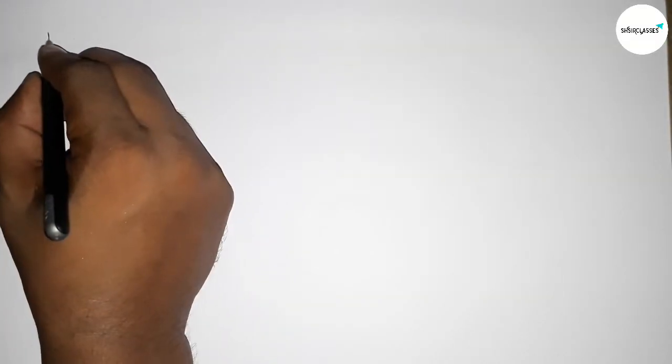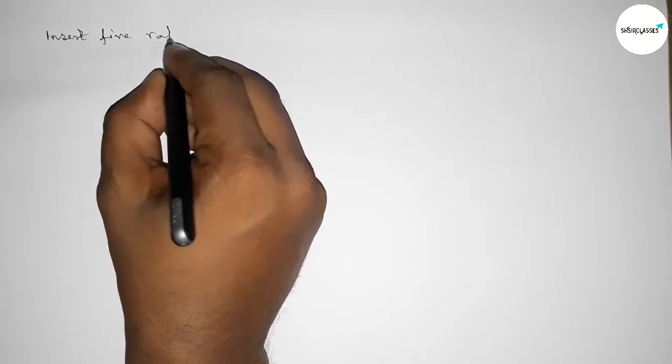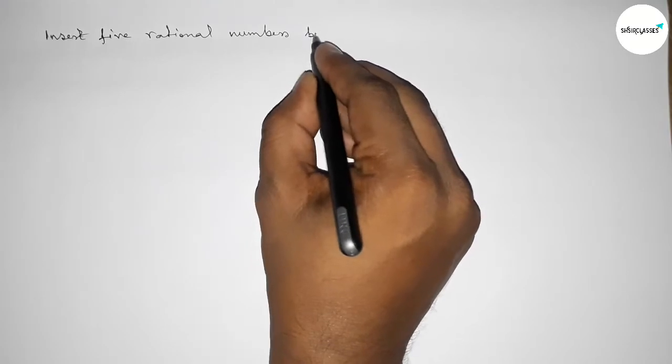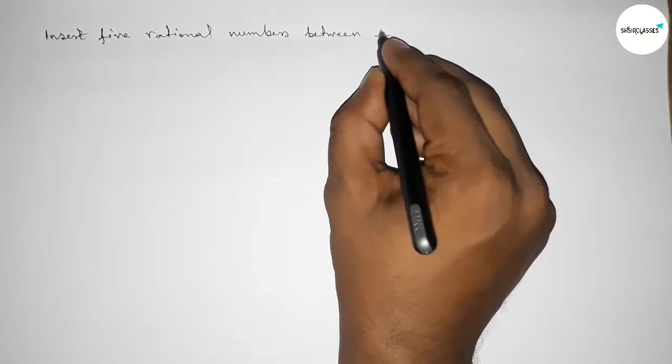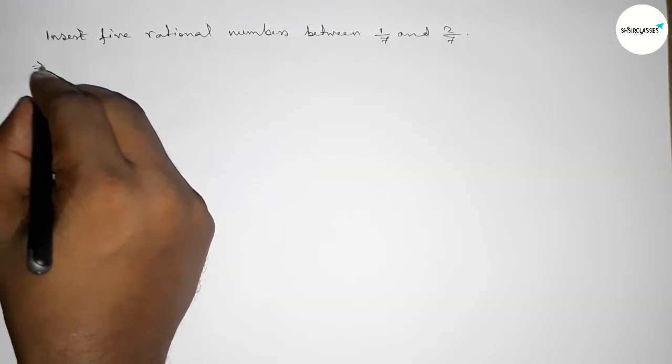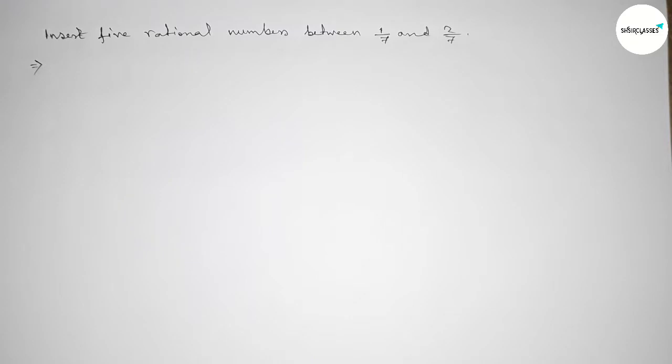Hi everyone, welcome to SA Share Classes. Today in this video, we have to find five rational numbers between 1/7 and 2/7 in an easy way. So let's start the video and solve this problem.